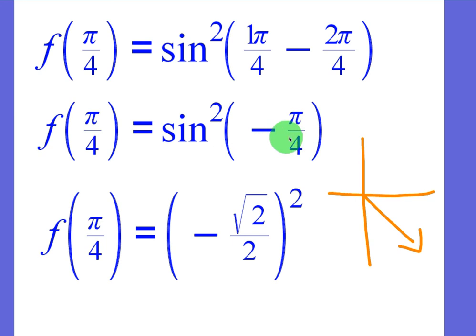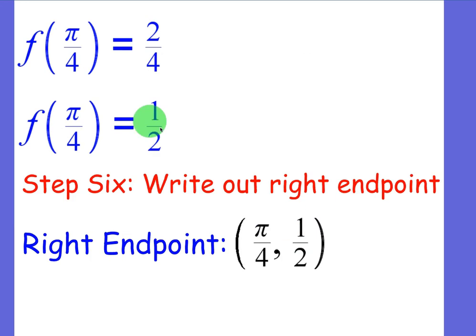Once we figure out sine of negative pi over 4 equals negative square root of 2 over 2, then we can square that. The negative is going to go away. Square root of 2 over 2 squared is just 2, and then 2 squared is 4, so it's going to be just 2 over 4. It's going to give us 1 half. So our right endpoint is pi over 4 comma 1 half.